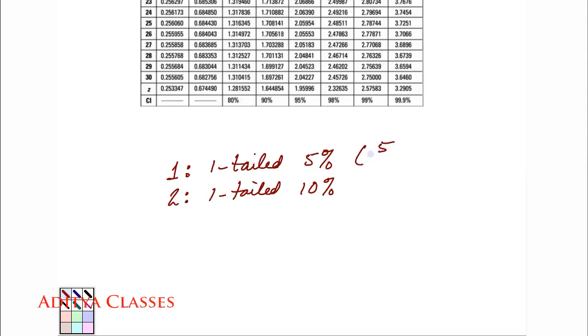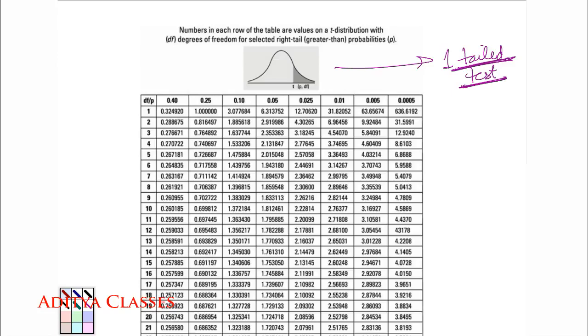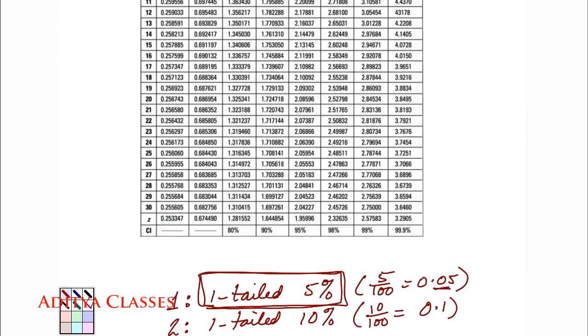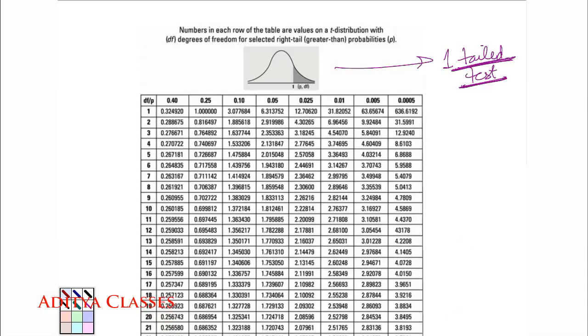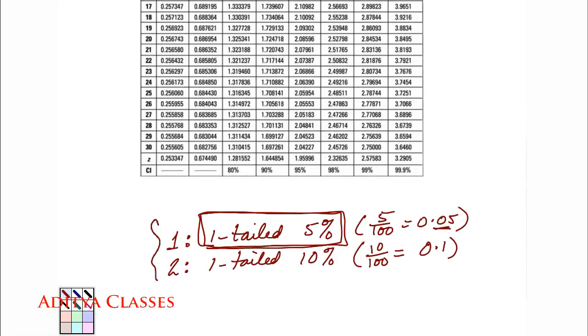So first things first, this 5% will not be available there as 5%, rather it will be available as 0.05. This 10% will not be available as 10%, rather it will be available as 10 by 100 or 0.1. This you need to take care. And then, so my first case is 1-tailed 5%.